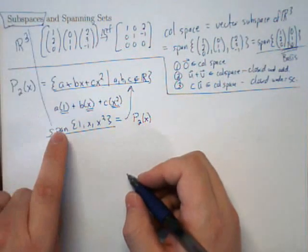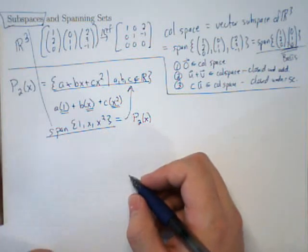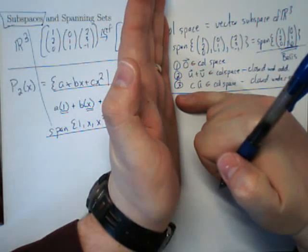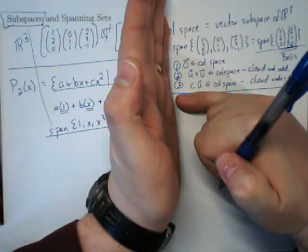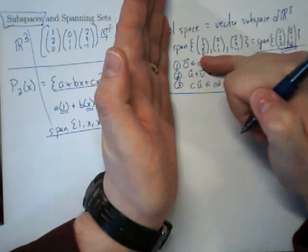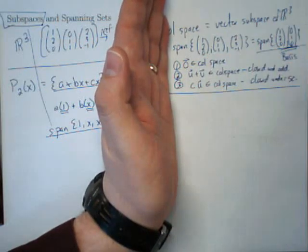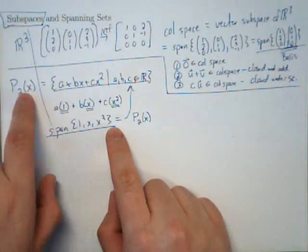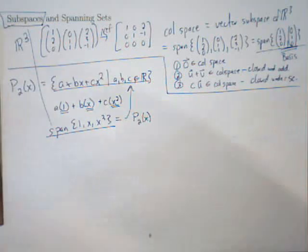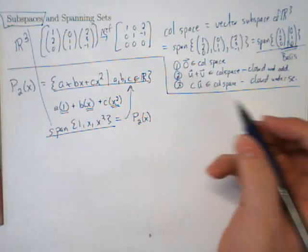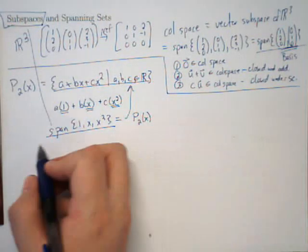The key is that the span of a set of vectors is precisely the same thing as a subspace. Every subspace is always the span of a collection of vectors. One way to show that you have a vector subspace is to verify these three things: 0 is in the set, it's closed under addition, and it's closed under scalar multiplication. Another option: just find a set that spans the space, and that gives you a vector subspace. So {1, x, x²} is a basis for P2(x), and P2(x) is a vector subspace of dimension 3.